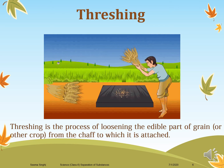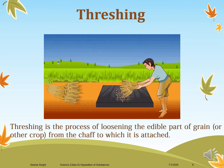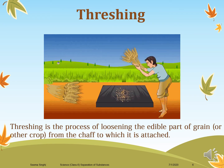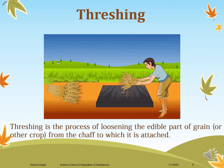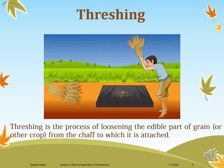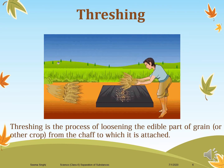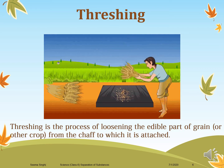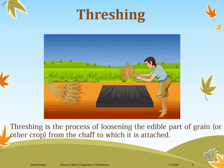Now let's understand what threshing is. Threshing is the process of loosening the edible part of grain from the shaft to which it is attached. It is a manual method used to separate the edible part. The shaft is beaten on a hard surface, causing the edible part to detach so we can easily get the edible grains separated. This method is used majorly in remote areas for cleaning grain.